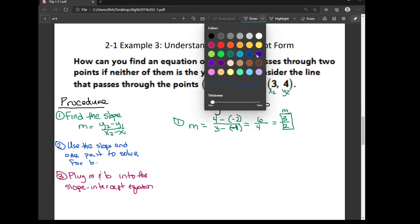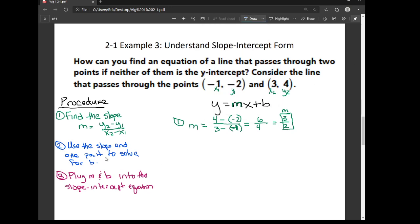Now step two says to use the slope and one of the points to solve for b. It doesn't matter which point you choose, but I usually prefer to use the one that doesn't have any negatives because negatives make me nervous.